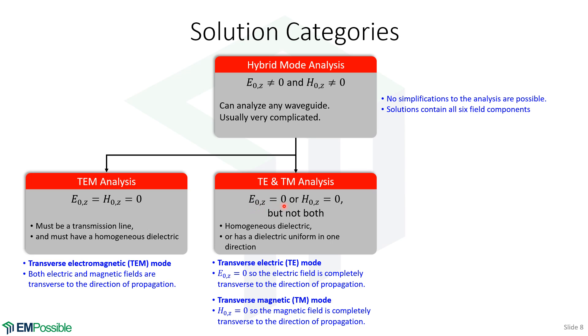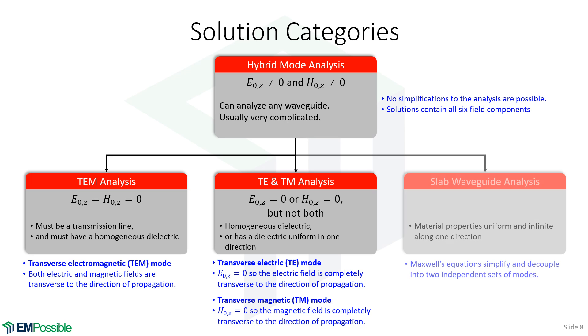When E0Z is zero, the electric field is completely tangential to the direction of propagation, and we call that a TE mode. Likewise, when H0Z is zero, the H field is completely tangential to the direction of propagation, which is Z. So we call that a TM mode.